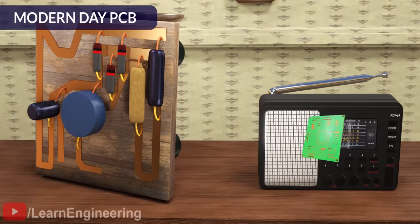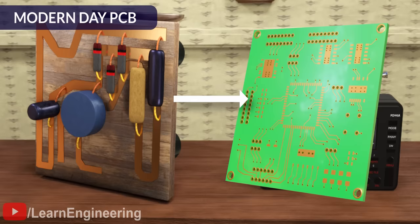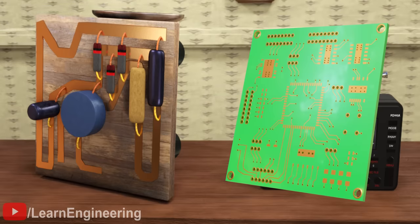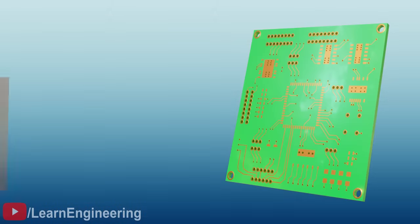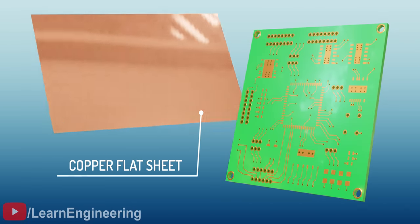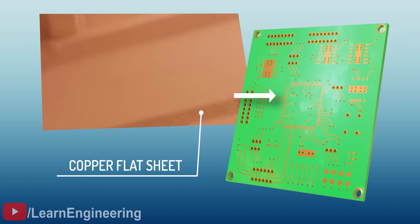However, a modern-day PCB looks like this, much more sophisticated, tiny, and complex. A modern-day PCB manufacturing starts from a simple copper flat sheet. Let's see how this sheet evolves into a sophisticated electronic device in a detailed logical manner.